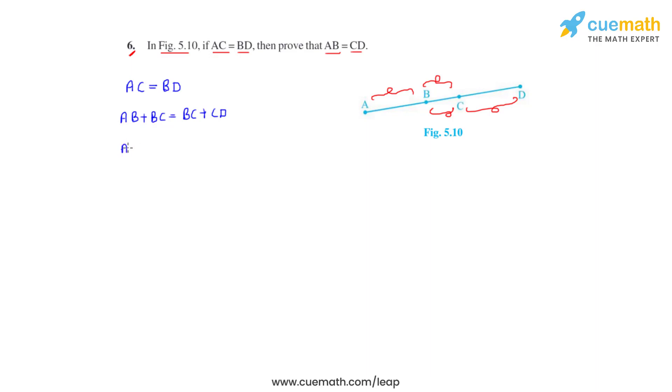So let's do that. AB plus BC minus BC equals BC plus CD minus BC. So what we now get is AB equals CD.